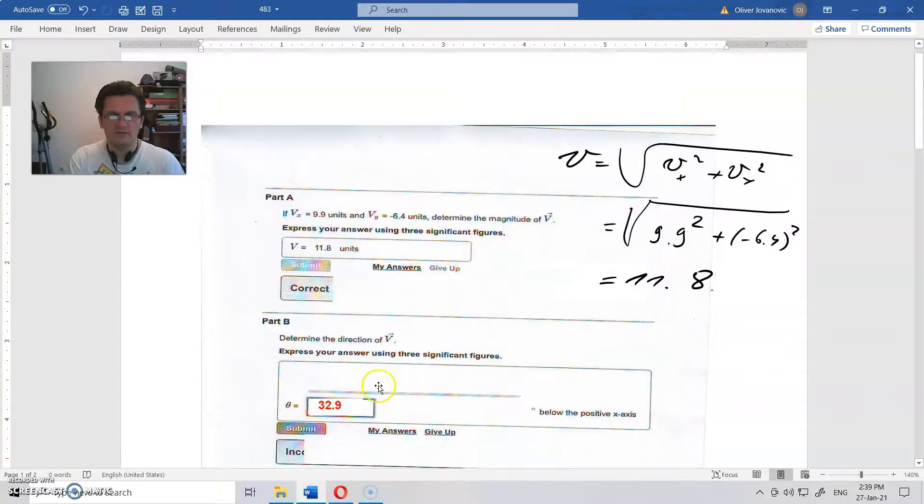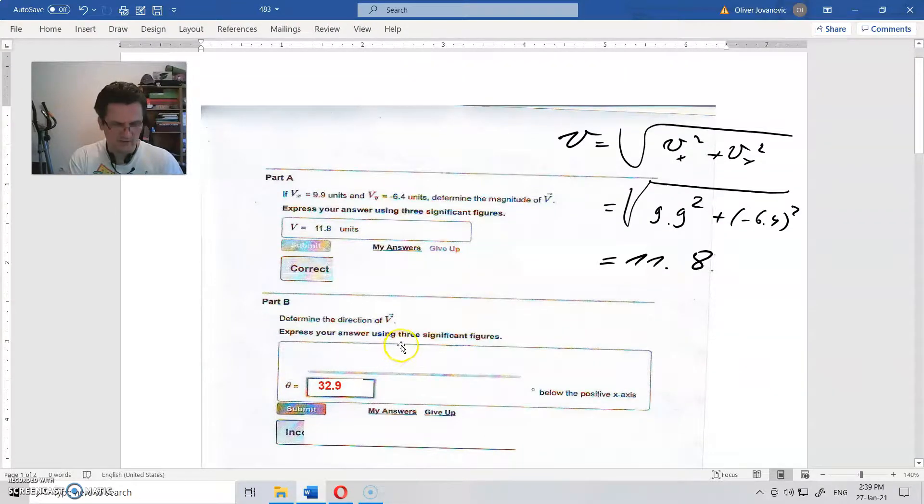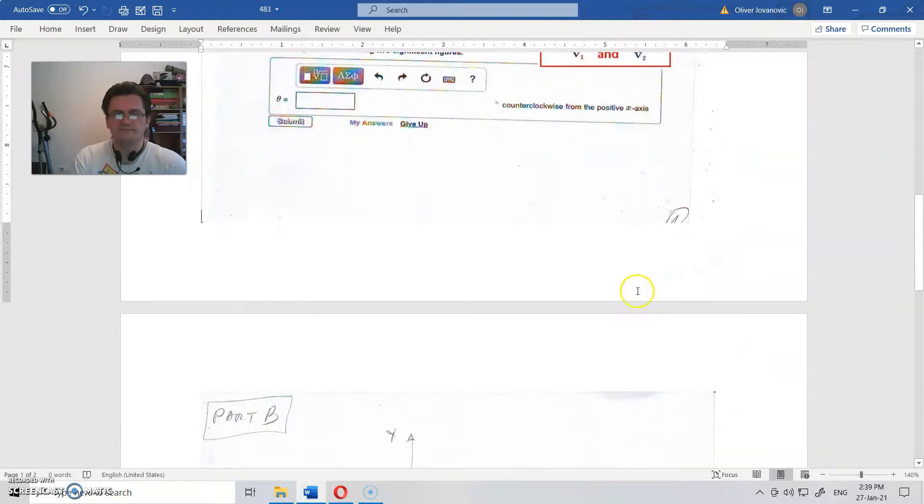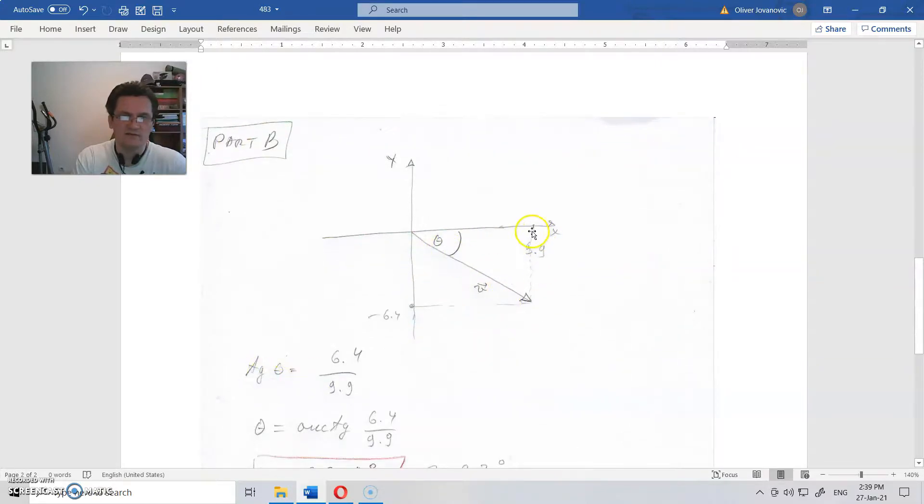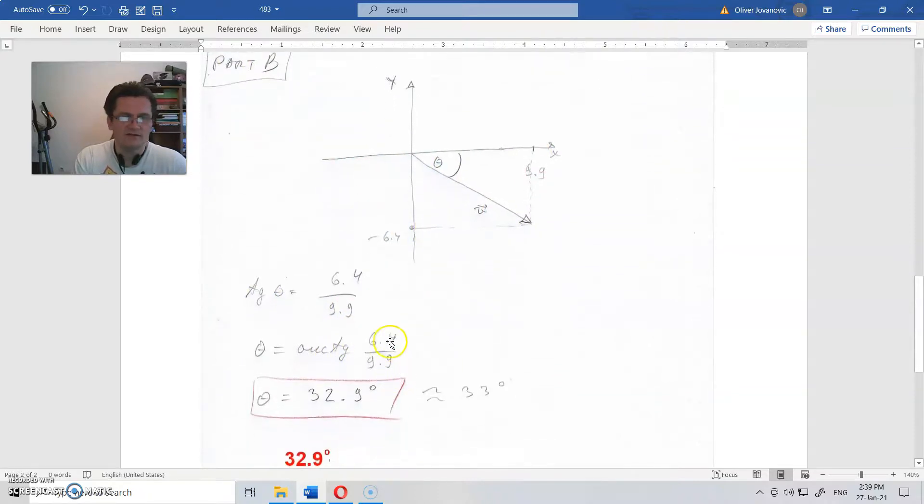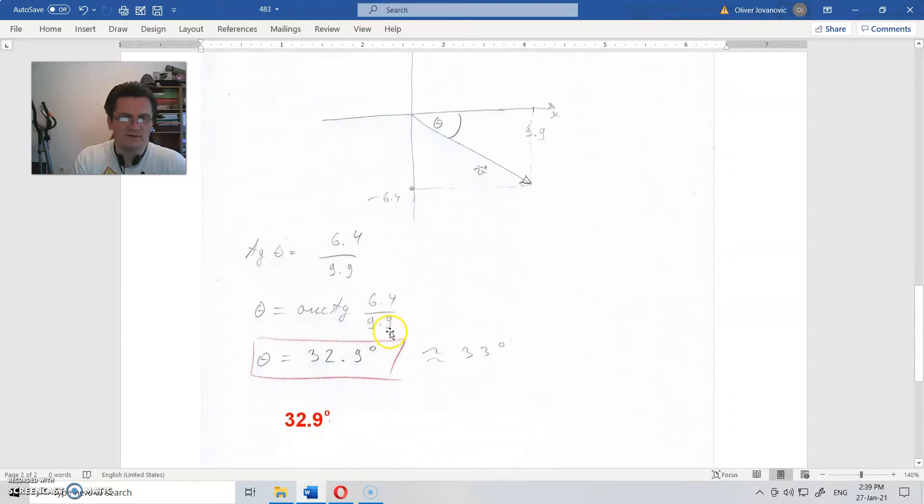Now direction of this velocity. You have magnitude of 11.8. And this is the x-axis, below this x-axis. So tangent of this angle here is when you divide this distance with this one. Tangent of 6.4 divided by 9.9 is 35.9 degrees.